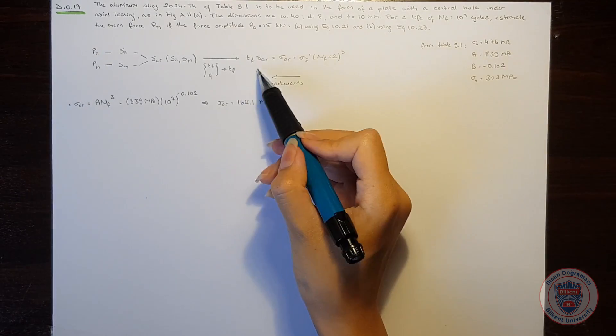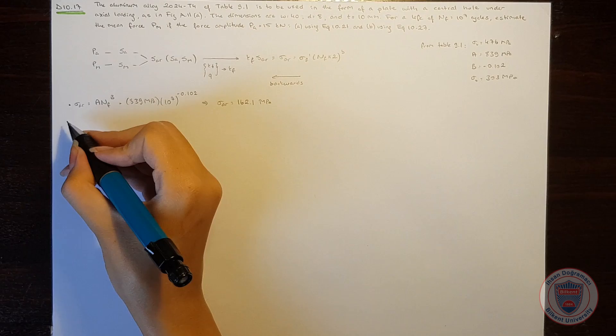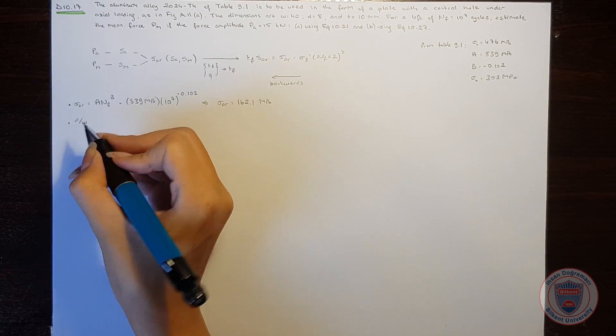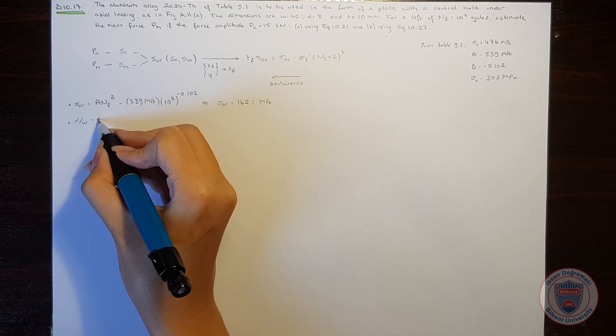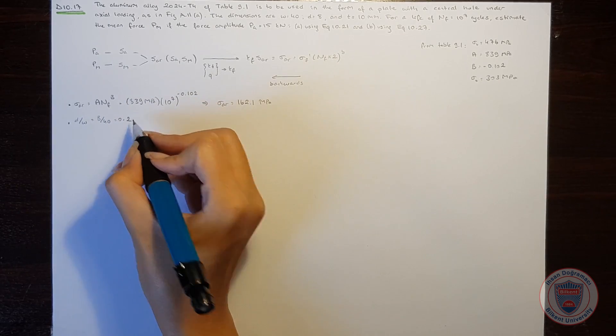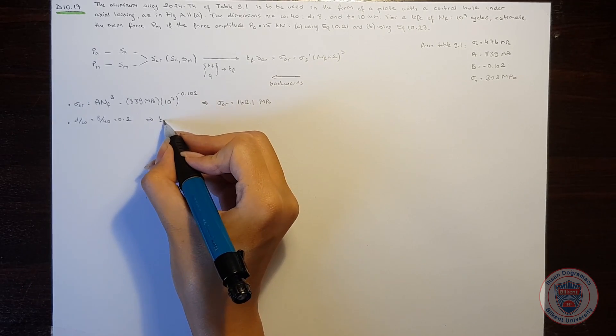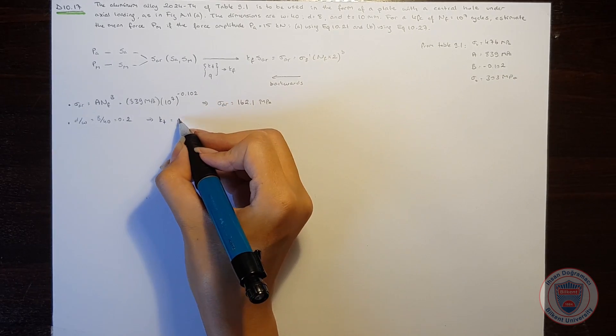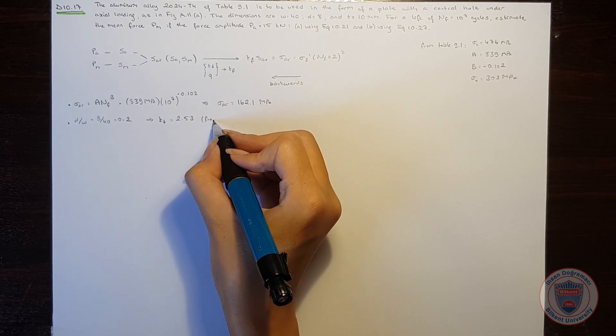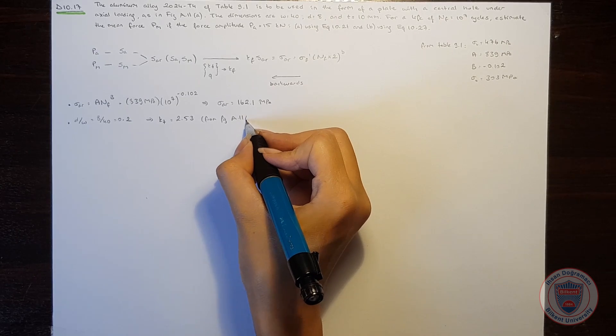Now we should find KF to find SAR. Since the diameter over width is equal to 8 over 40 which is 0.2, the stress concentration factor will be equal to 2.53 from figure A.11 part A.